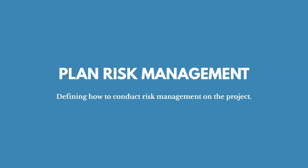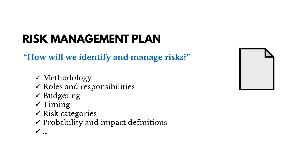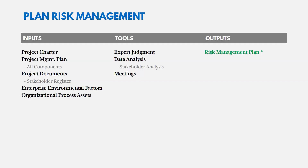The first process is plan risk management — defining how to conduct risk management on the project. Like all plan processes, you have the project management plan as an input and individual plans as output — in this case, the risk management plan. The risk management plan describes how risks will be managed, including methodology, roles and responsibilities, budgeting, timing, risk categories, and definitions of probability and impact. Tools include expert judgment, data analysis, and meetings.